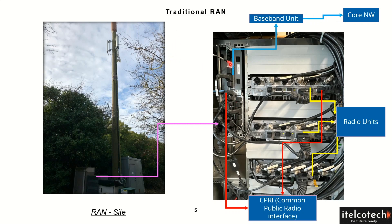This transport network, as we have seen, can be a microwave antenna — on the left side we have seen there is a microwave antenna taking it back to the core network — or it can be a fiber cable going underground or over the poles, going back to the data center. This is how the overall radio access network scenario looks like.